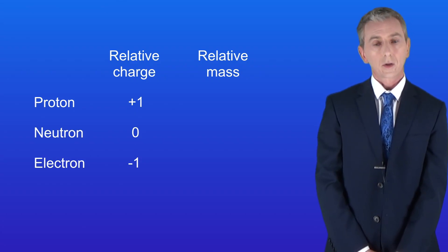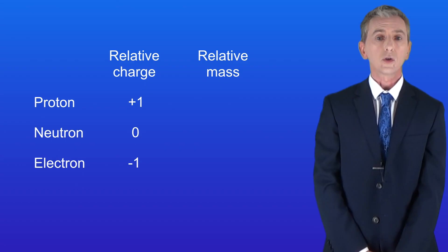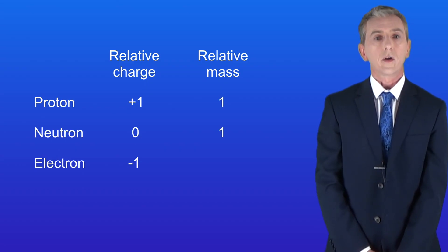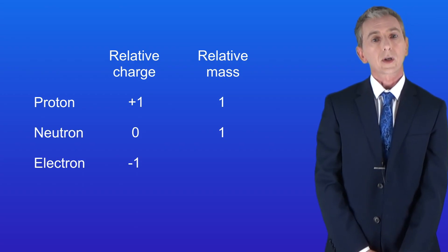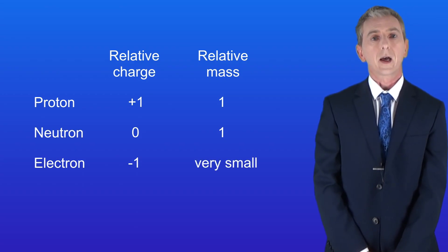Now looking at the relative masses we can see that both protons and neutrons have a relative mass of 1. That tells us that protons and neutrons have the same mass. Electrons are much smaller. You don't need to know the exact relative mass of electrons but you can say very small in the exam.